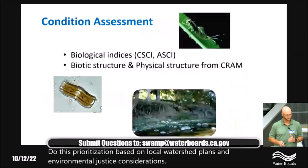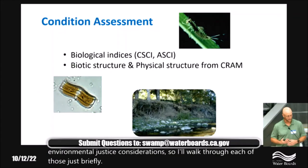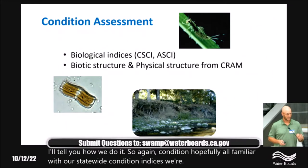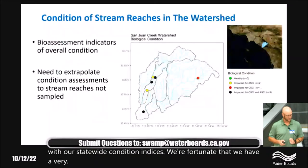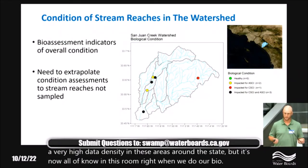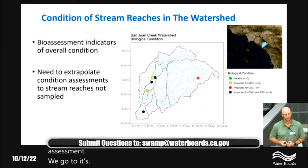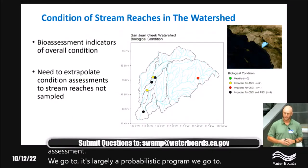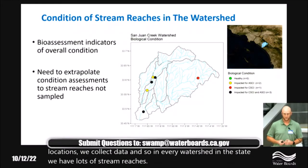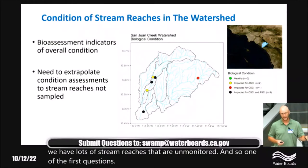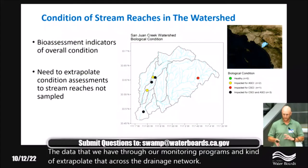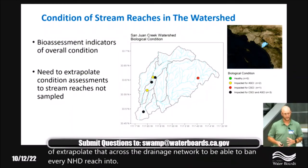On condition: we're fortunate to have very high data density around the state from our statewide condition indices. But our bioassessment program is largely probabilistic — we go to specific locations and collect data, so in every watershed there are many unmonitored stream reaches. The question is: how do we take the data from our monitoring programs and extrapolate across the drainage network to bin every NHD reach into intact or degraded? That's where models come in — in this case we used random forest modeling, similar in approach to the boosted regression trees Corey described.